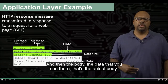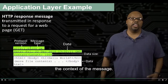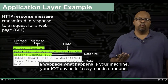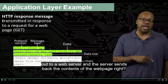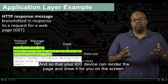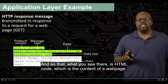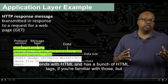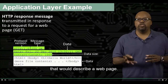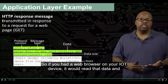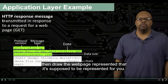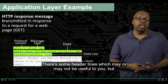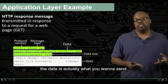There's a lot of different header information you can put in the header. The body is the actual content of the message. In this example, if you're asking for a web page, your machine — your IoT device — sends a request to a web server, and the server sends back the content of the web page so your IoT device can render the page. What you see in the body is HTML code, which describes the web page. If you had a web browser on your IoT device, it would read that data and draw the web page as it's supposed to be represented.